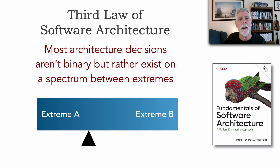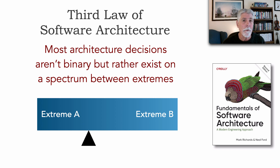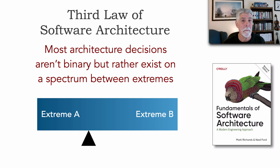In the book, we provide a lot of examples of this third law, including the difference between architecture and design — where some things, about five percent, do exist at the extreme, but the other 95 percent of decisions lie somewhere in the middle. This is due to the first law of software architecture, because everything is a trade-off, and the decisions we make as architects are not always as clear as we would like them to be.